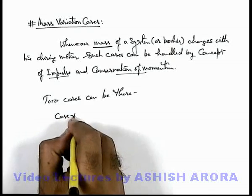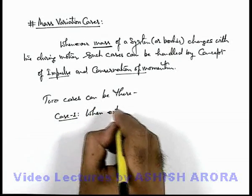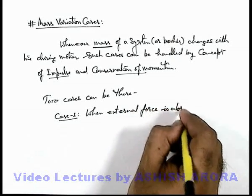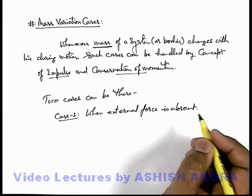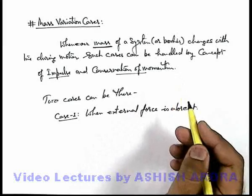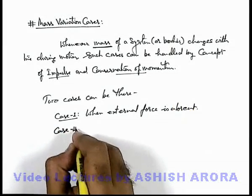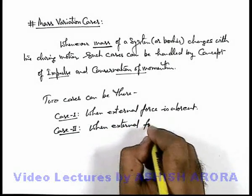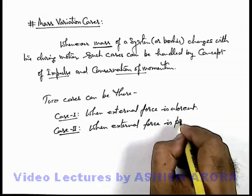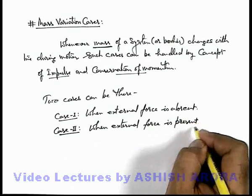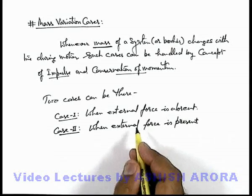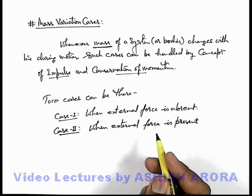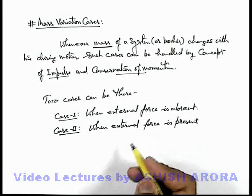Case 1 would be the situation when external force is absent. So we can state: if external force is absent, the total momentum of the system will remain conserved. Another case is when external force is present. Let's discuss both of these cases step by step with various different kinds of examples.